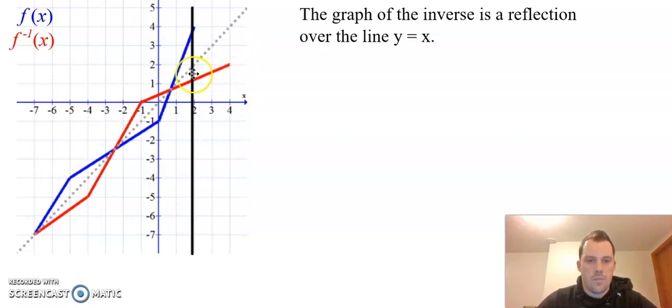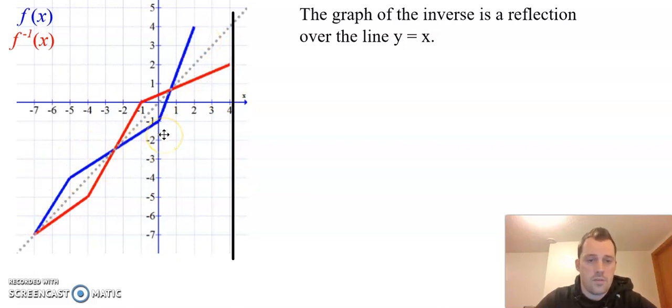Similarly, when we have our inverse graphed, we know for sure this is an inverse because it also passes the vertical line test. Well, there's a way to test if a function has an inverse without having to actually graph it.